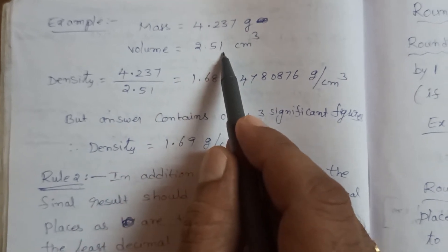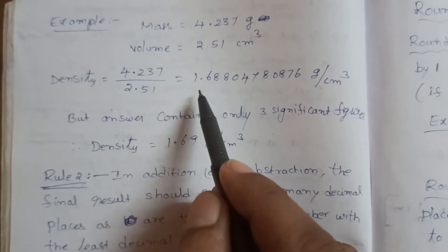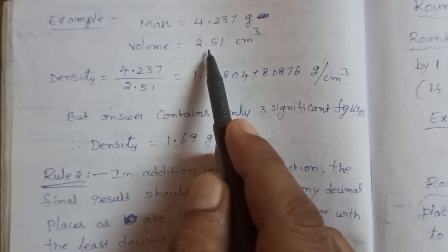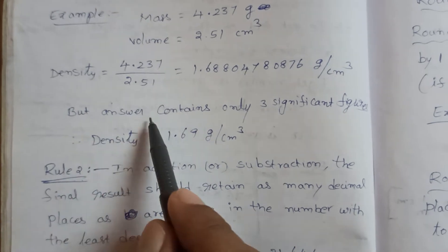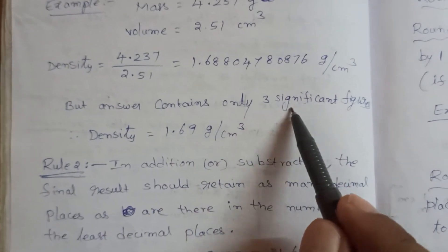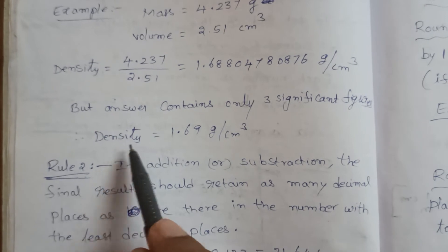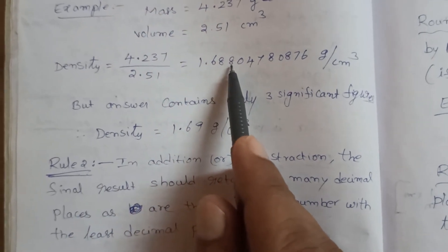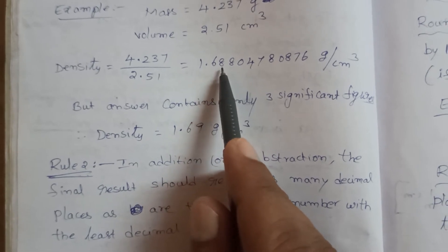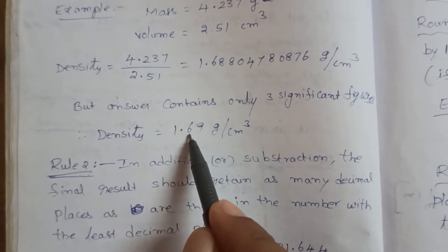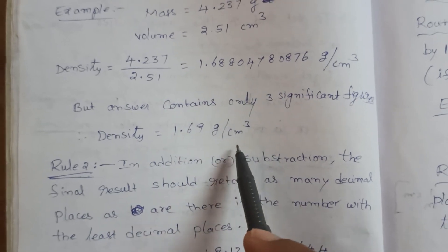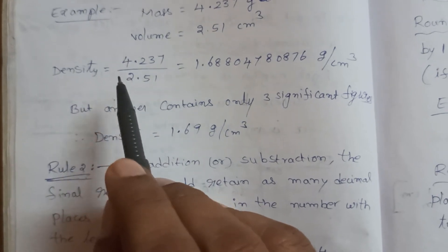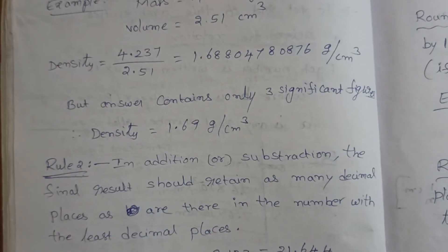For volume (2.51) the significant figures is 3. The least value of significant figures is 3, so the answer should contain only 3 significant figures. Rounding 1.68804... to 3 significant figures gives 1.69 grams per cubic centimeter. This same rule applies to both division and multiplication.